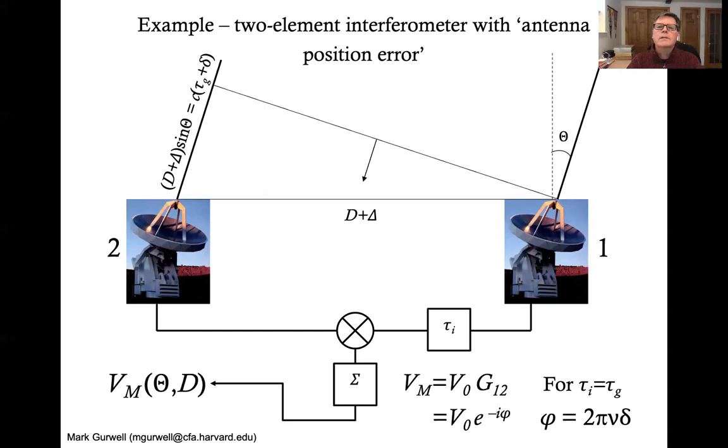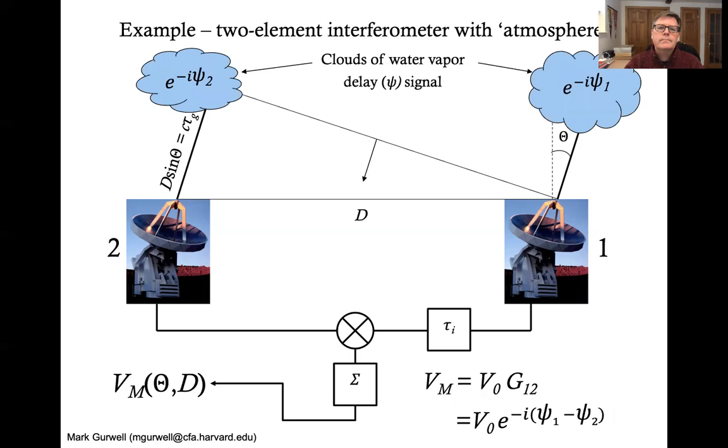So here's an example of that, a two element interferometer with an antenna position error. Instead of knowing our baseline perfectly, there's an offset delta to the baseline distance in this case. Therefore, when you calculate the delay that you're putting in on the signal one, assuming you know it to be d, and there's actually an offset, there will be a small offset in the delay from what you would expect. That means that the phase you derive of the visibility that you measure is not a constant at zero phase, but a constant with a small phase offset in this simple example.